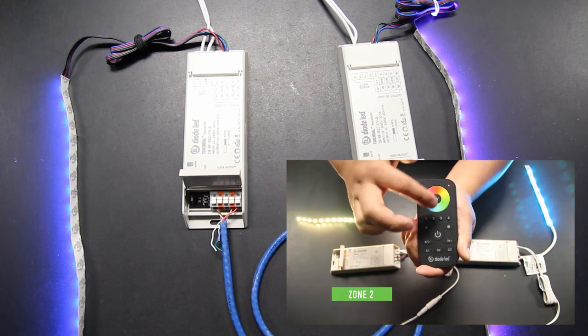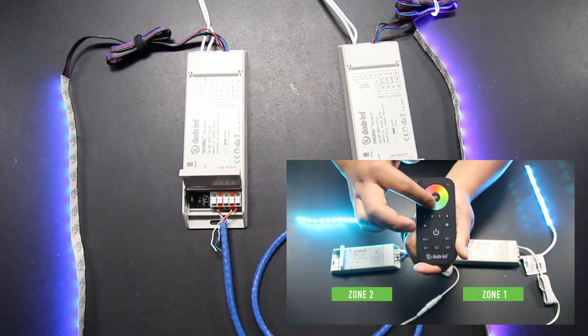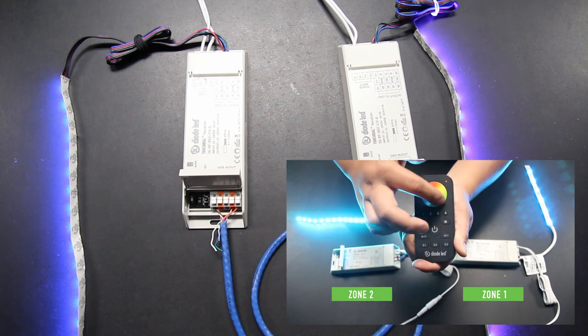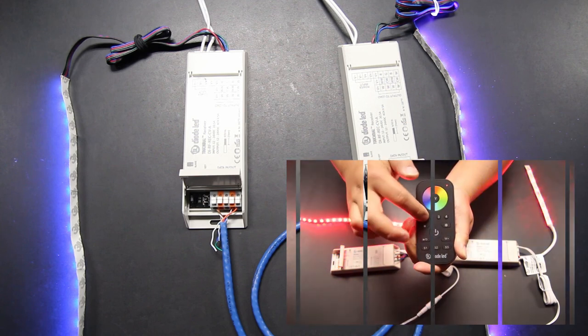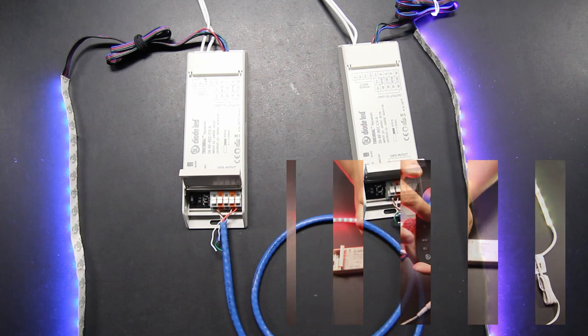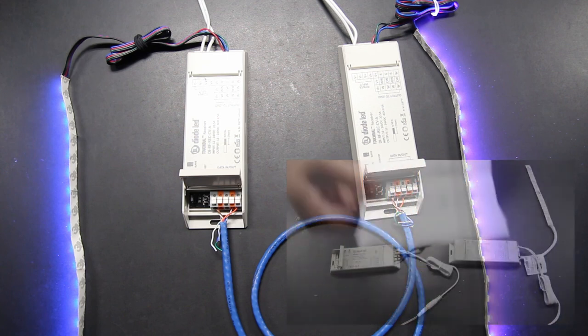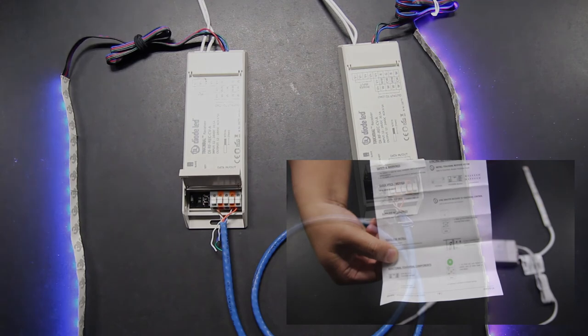Keep in mind also, if you're using touch dial receivers that were previously part of a system or were used for a demonstration like our system in this video, you must reset the receivers by pressing and holding the learning key of the touch dial receivers until the lights begin to flash. Once done, perform the remote syncing process mentioned previously.